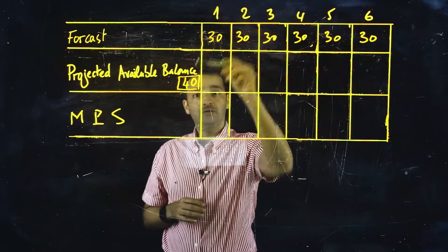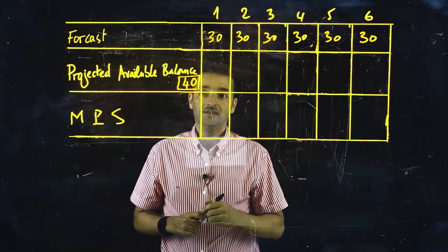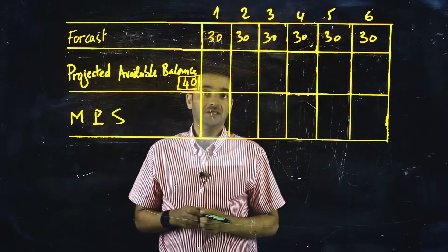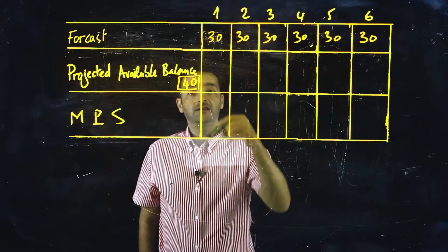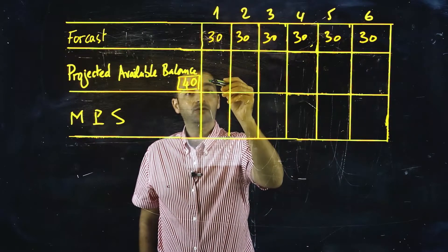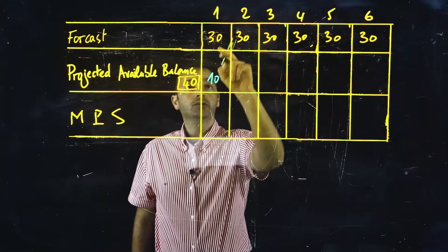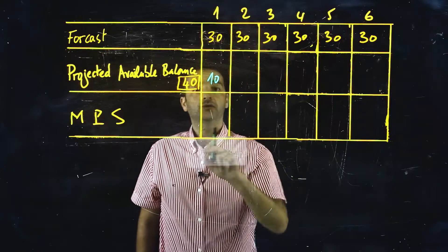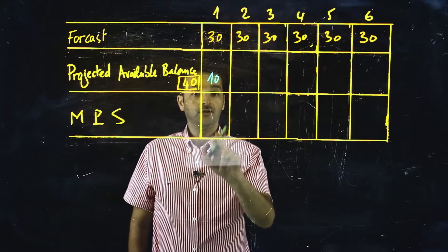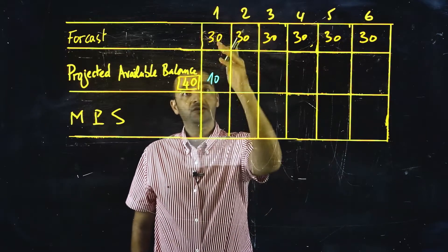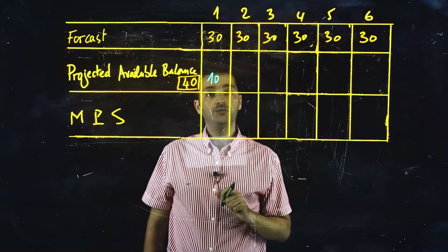For the first period, the projected available balance before the beginning inventory is 40 units. This is enough to cover the first period, and the new projected available balance will be the difference between the old value and the forecast. So 40 minus 30 — the new projected available balance will be 10. No MPS is needed because the projected available balance was enough to cover the forecast for the first period.